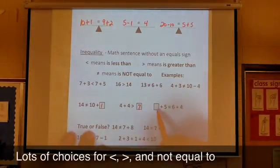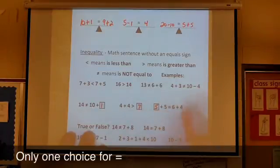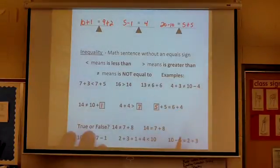And for this one, I have to, if it's equal, then I have to make it equal. So I really only have one choice here. I have to put 5 so that I have 10 on this side and 10 on that side.